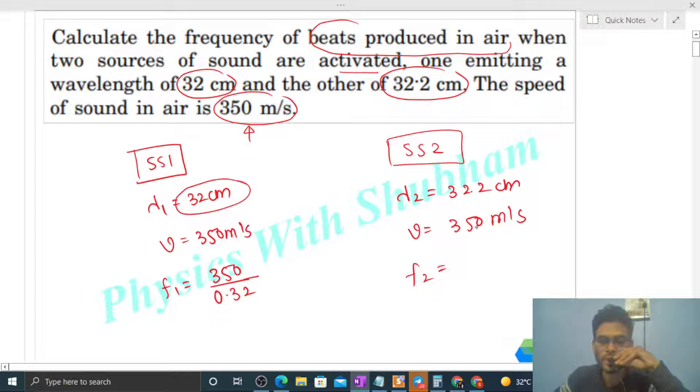Similarly, f2, the second sound source's frequency, that will be speed divided by its wavelength, 0.322, right?